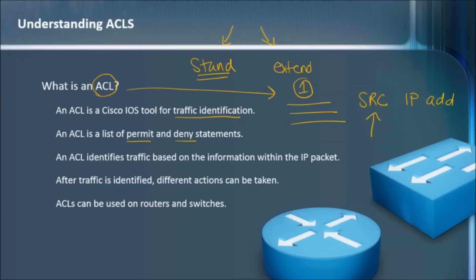Once we start getting into the extended, we can look at source and destination and all sorts of other cool stuff. After all that traffic has been identified, a variety of actions can be taken. We can leverage that ACL for things like network address translation, or maybe if we're doing something like VPN, we can grab a certain flow of traffic and say, let's go ahead and pop this into our VPN configuration. ACLs can be used on routers and switches. When you progress your study, you'll learn about different types of ACLs, like even VLAN ACLs and port access control lists. They can get pretty fancy.